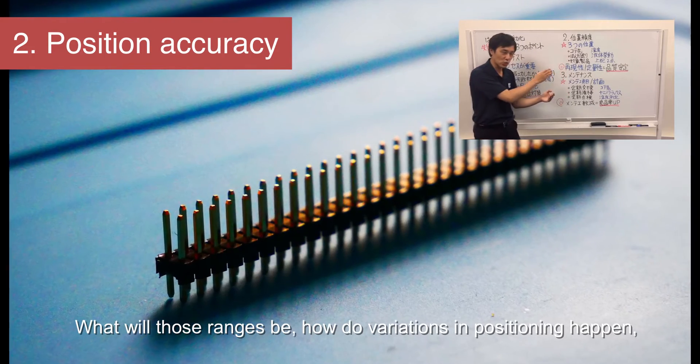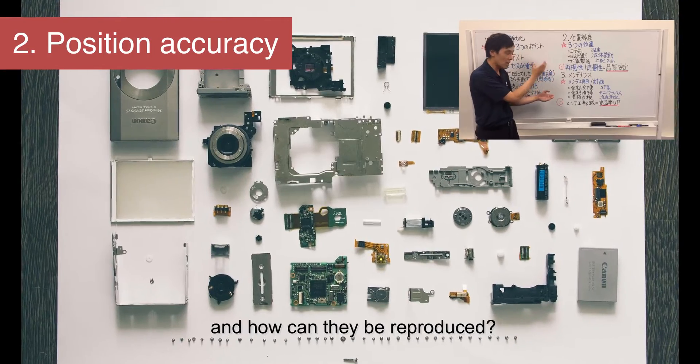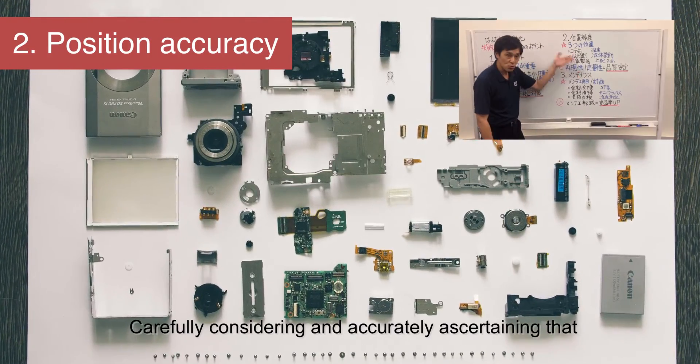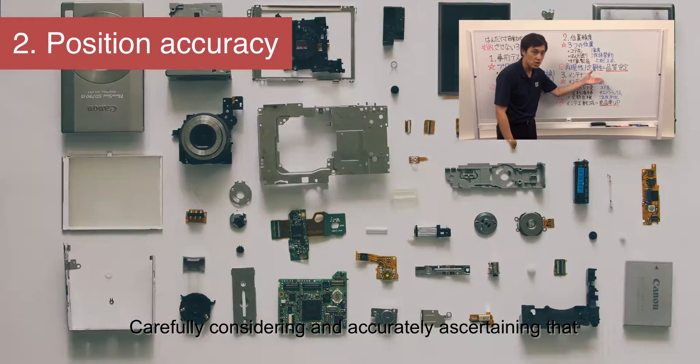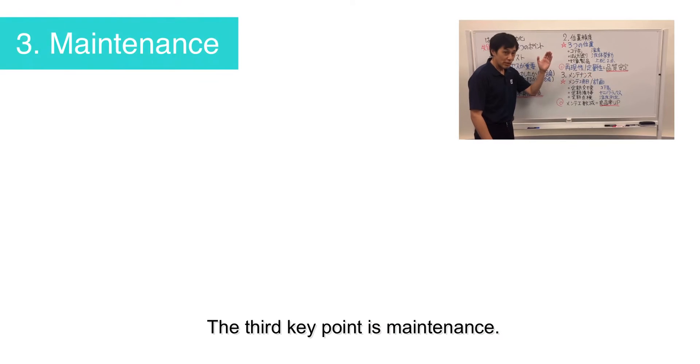What will those ranges be? How do variations in positioning happen? And how can they be reproduced? Carefully considering and accurately ascertaining that, and maintaining repeatability and measurability will help you to achieve consistent quality in mass production.